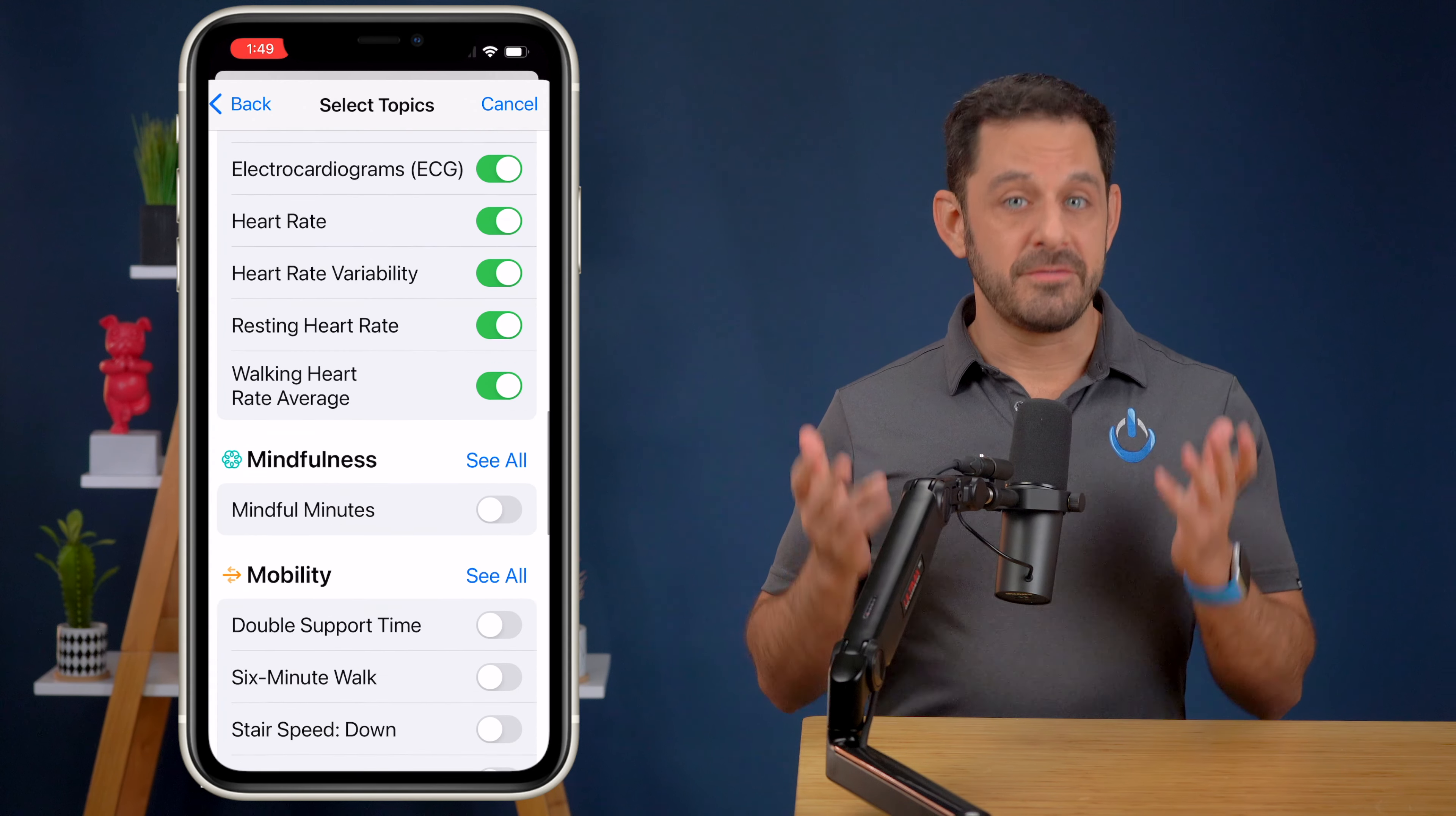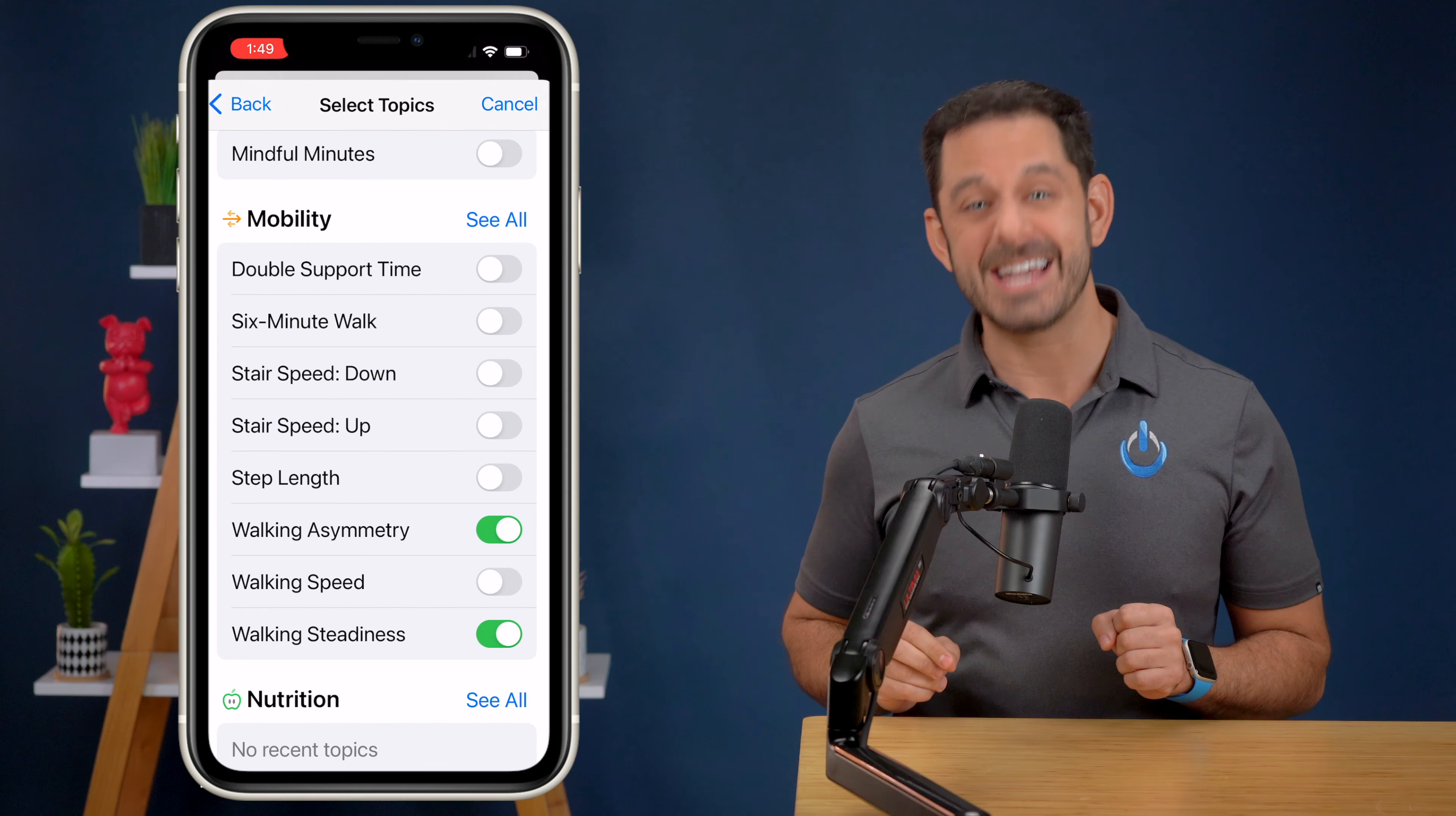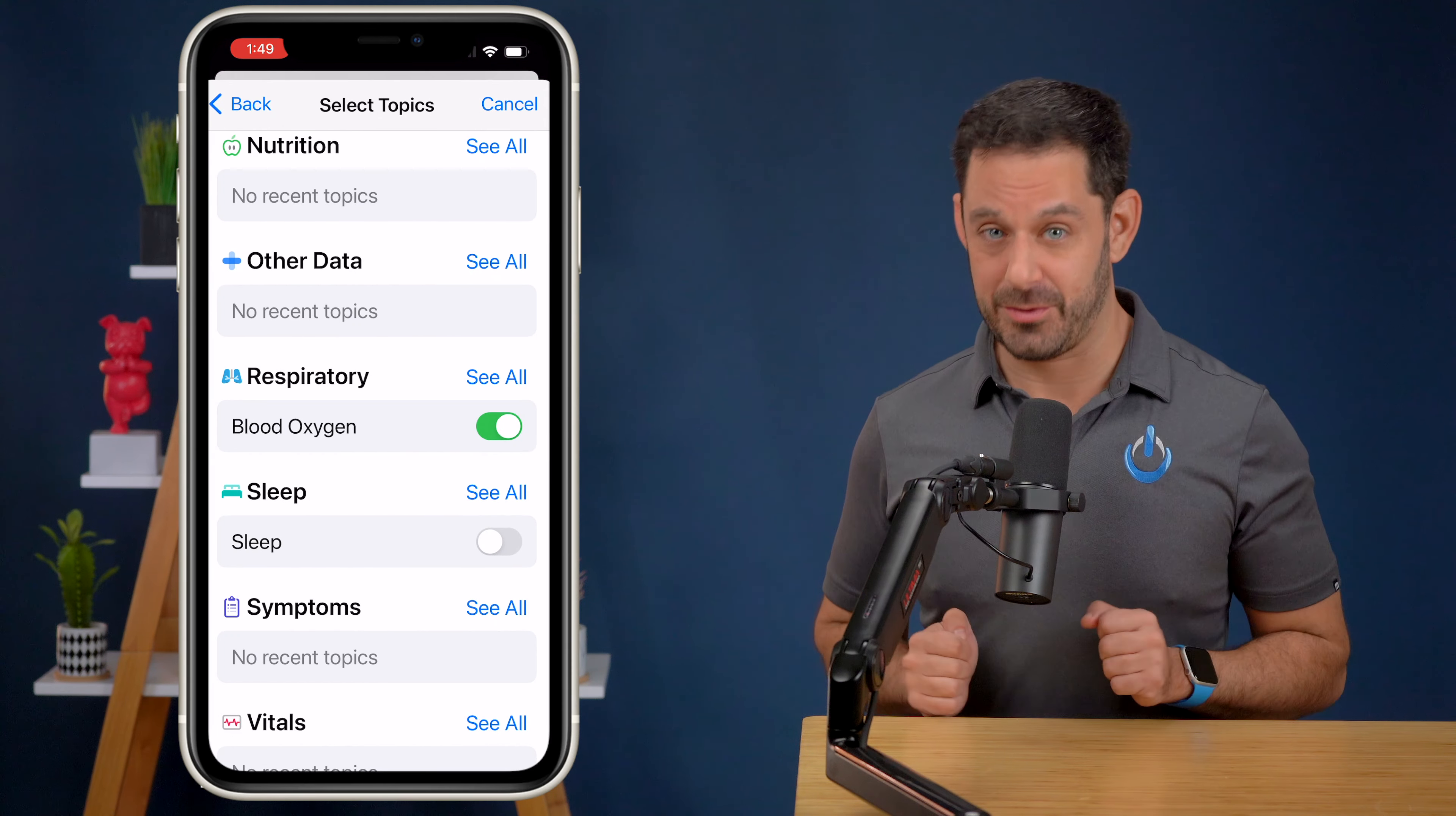If you have loved ones who are a fall risk, then be sure to check out some of the metrics in mobility, including walking asymmetry and walking steadiness. If you scroll down further, you'll see the option to share blood oxygen levels. Again, lots of really helpful information.